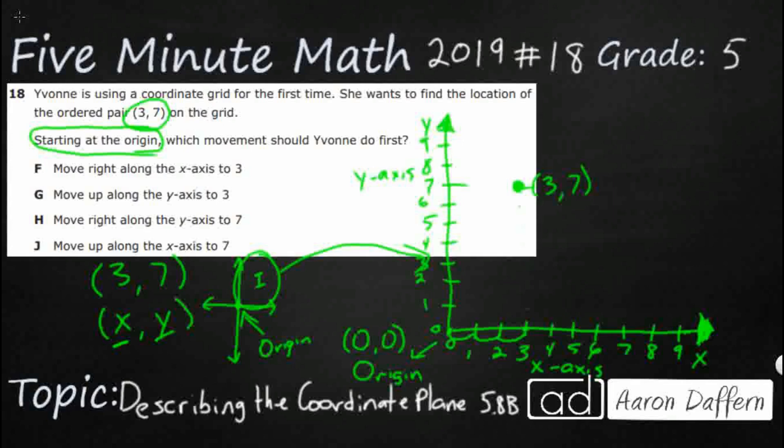Now what did Yvonne do first? Well, after we started at the origin, what she did is she moved right along the x-axis to 3. That's actually what we did. Move up along the... No, we don't move up, and even if we did, we should be moving up 7. We cannot move right along the y-axis to 7 and we cannot move up along the x-axis to 7. Our answer is F.